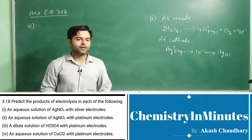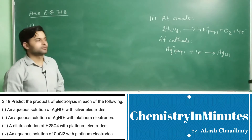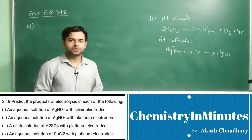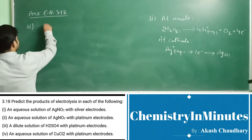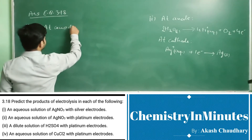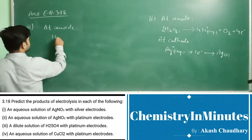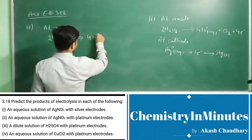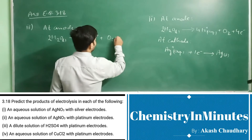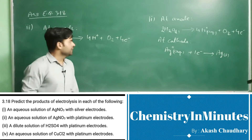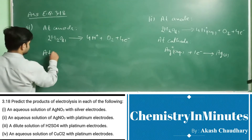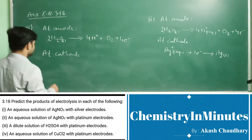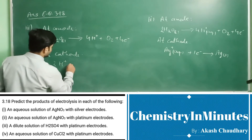In the third part, a dilute solution of H2SO4 with platinum electrodes. This is the case of electrolysis of water, and during electrolysis of water, hydrogen and oxygen gases are produced. At anode, oxygen gas will be the product: H2O(l) → 4H⁺ + O2 + 4e⁻.